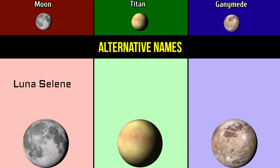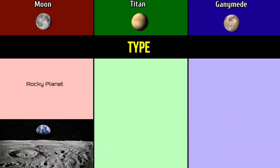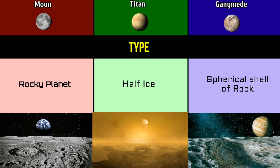Alternative names: Luna, Selena for the Moon; Luna Satmi for Titan; Jupiter 3 for Ganymede. Type: rocky planet, half ice, and spherical shell of rock.